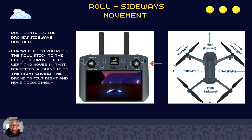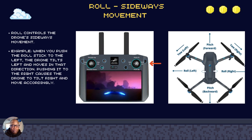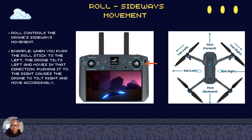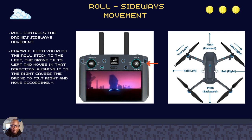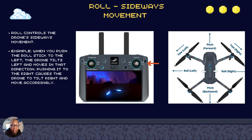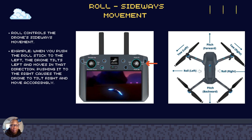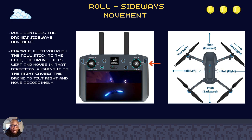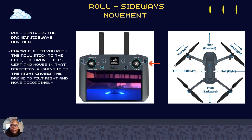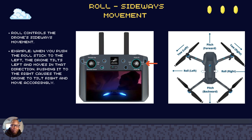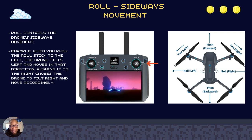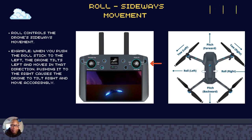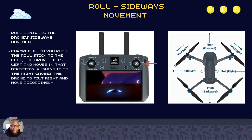Roll. Roll is always moving the drone from side to side. If you push the right stick to the left, the drone will tilt to the left and it moves in that direction. Pushing it to the right causes the drone to tilt to the right and it moves in that direction. You can see the diagram for an illustration of those movements.